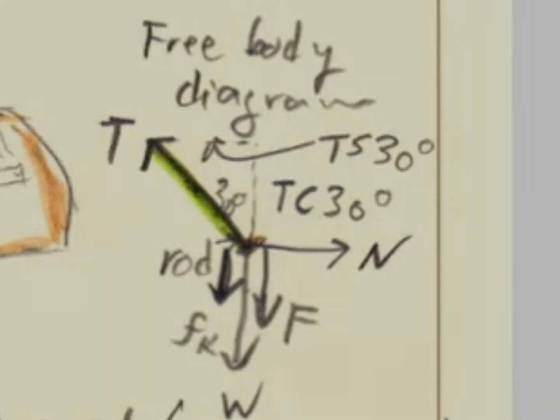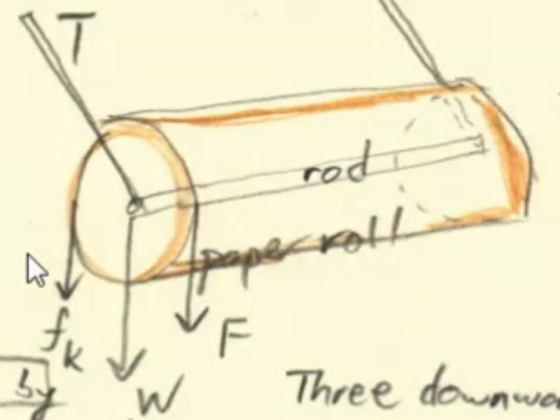The main part here for this problem is to try to get the direction of the friction force correct. As it's illustrated here, the friction force is downwards coming from the wall, acting on the roll of paper. So why is this?